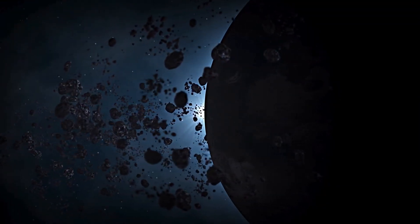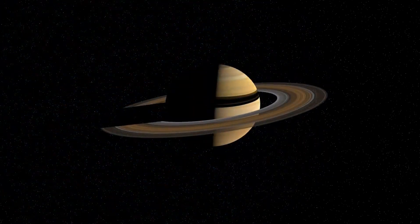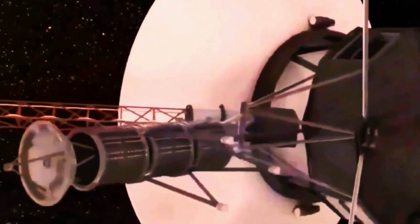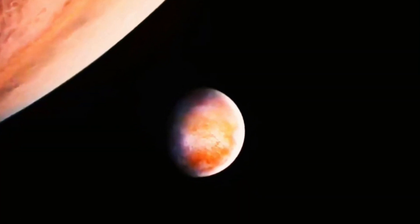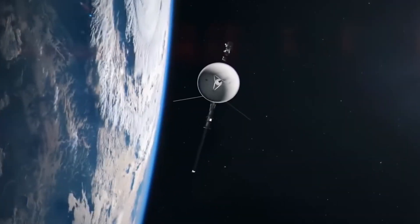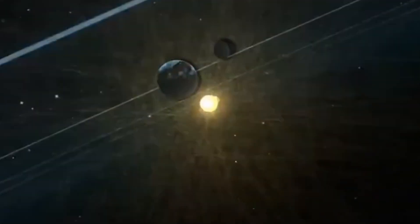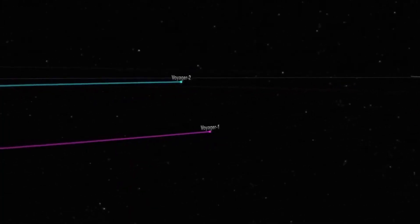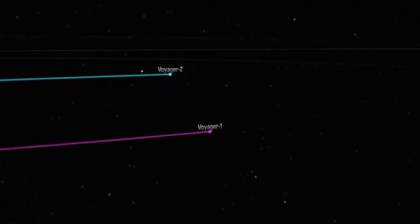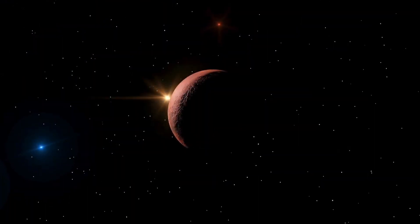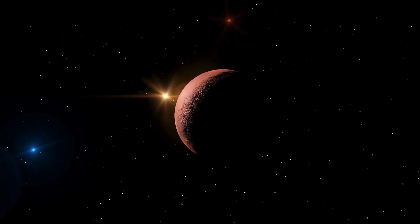Voyager 2's encounter with Neptune in 1989 uncovered a massive storm system known as the Great Dark Spot. Similar to Jupiter's Great Red Spot, this storm, nearly the size of Earth, exhibited winds exceeding 1,500 mph, the strongest observed in the solar system. The spot was transient, disappearing when Hubble later observed Neptune, suggesting that Neptune's atmosphere undergoes rapid and extreme weather changes.